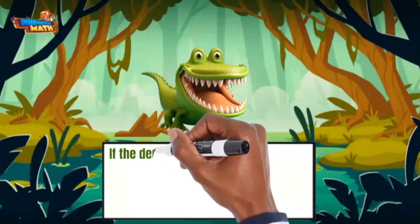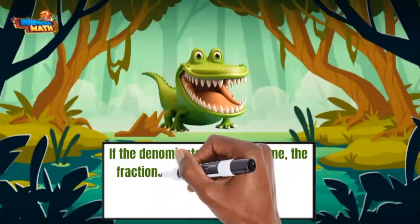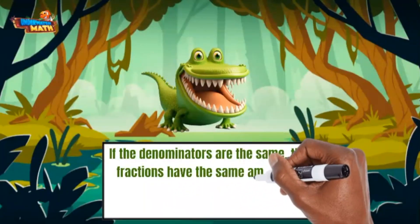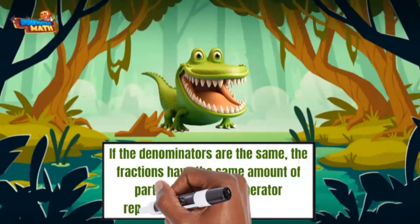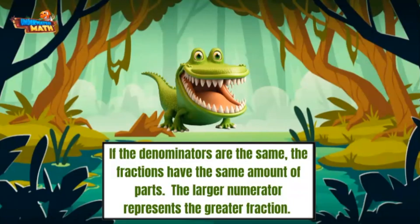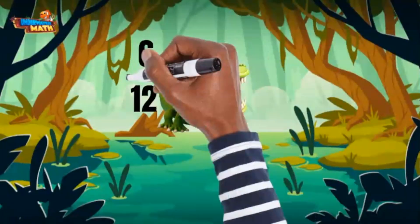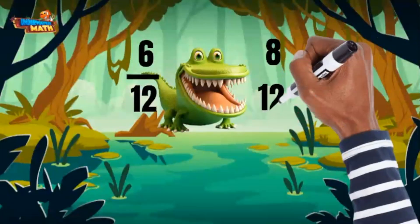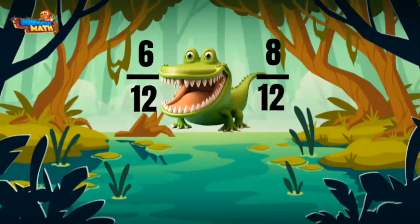If the denominators are the same, the fractions have the same amount of parts, and the larger numerator represents the greater fraction. I spy some more fractions: six twelfths and eight twelfths. They have the same denominator, so the larger fraction is the one with the larger numerator.